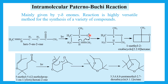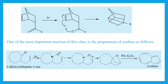Here is an enone. When irradiated, the oxygen forms a bond with the carbon and a more stable free radical is produced. Then bond formation between the two radical electrons takes place and the final bicyclic product is obtained. The mechanism is the same for all these intramolecular examples.